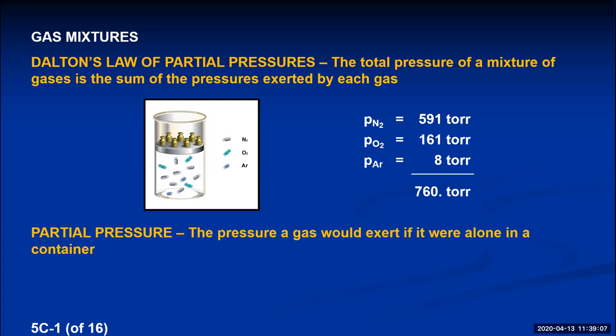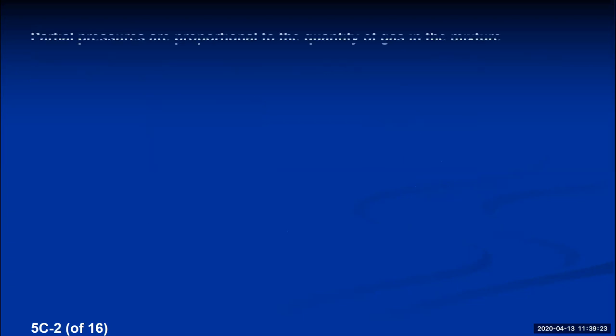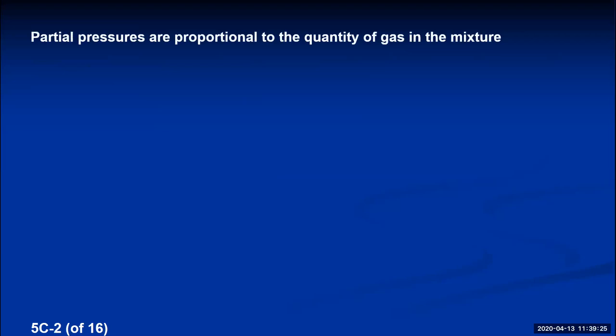Looking at this example, the partial pressure of nitrogen is much higher than that of oxygen and argon, because air is mostly nitrogen. It turns out that the pressure of a gas is actually related to how many molecules there are of that particular gas in the mixture. Partial pressures are proportional to the quantity of gas in a mixture, measured in either moles or molecules.